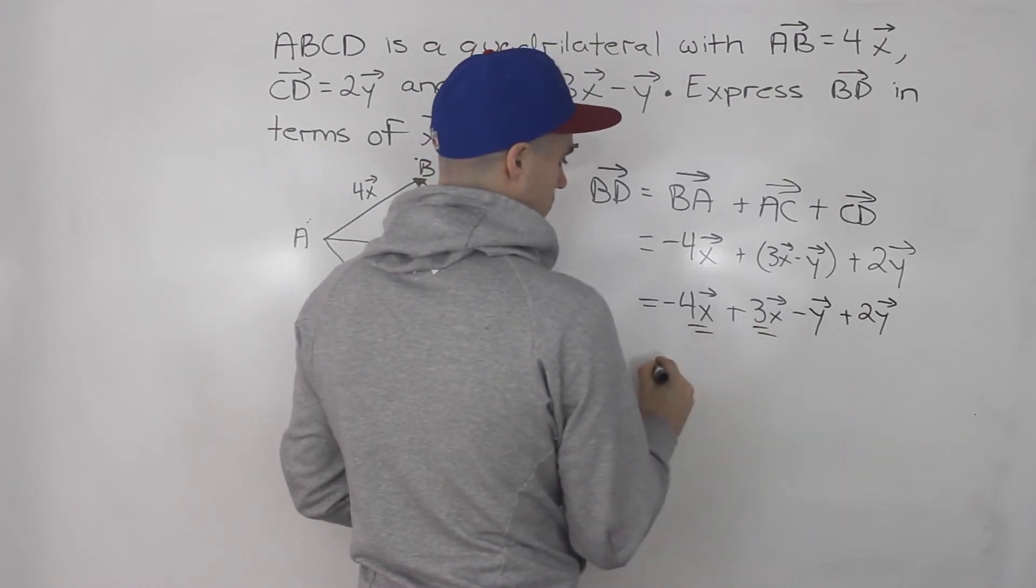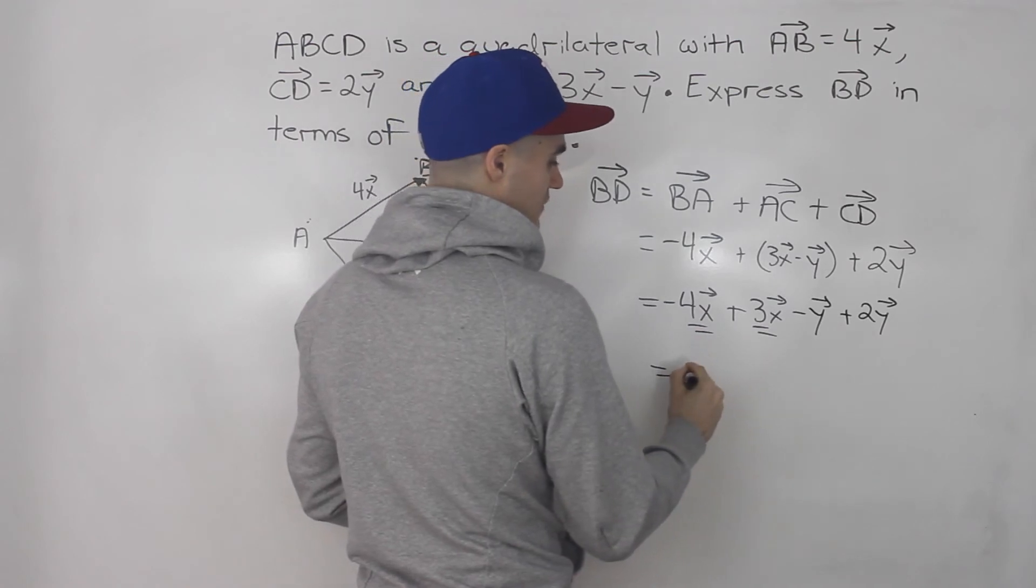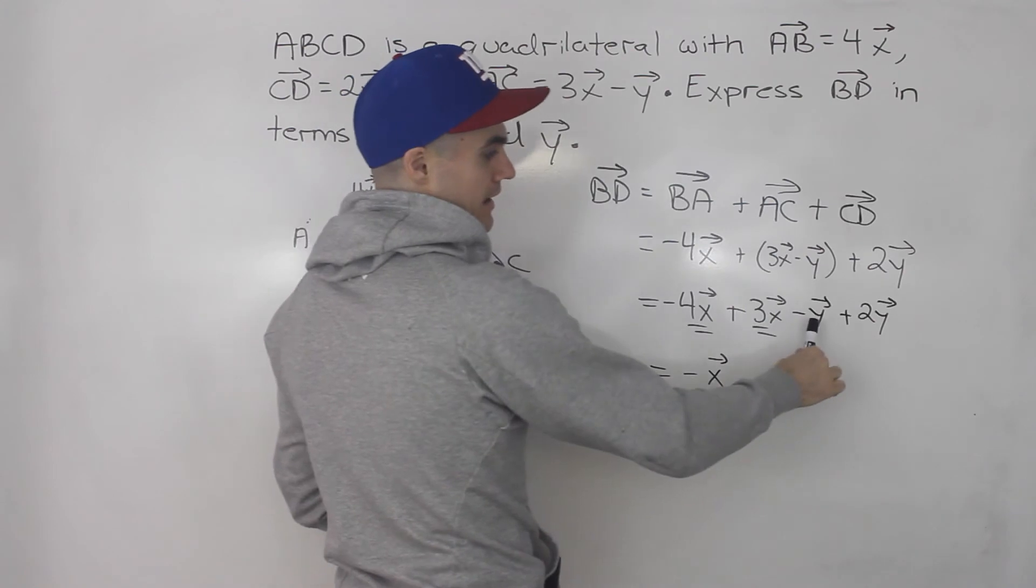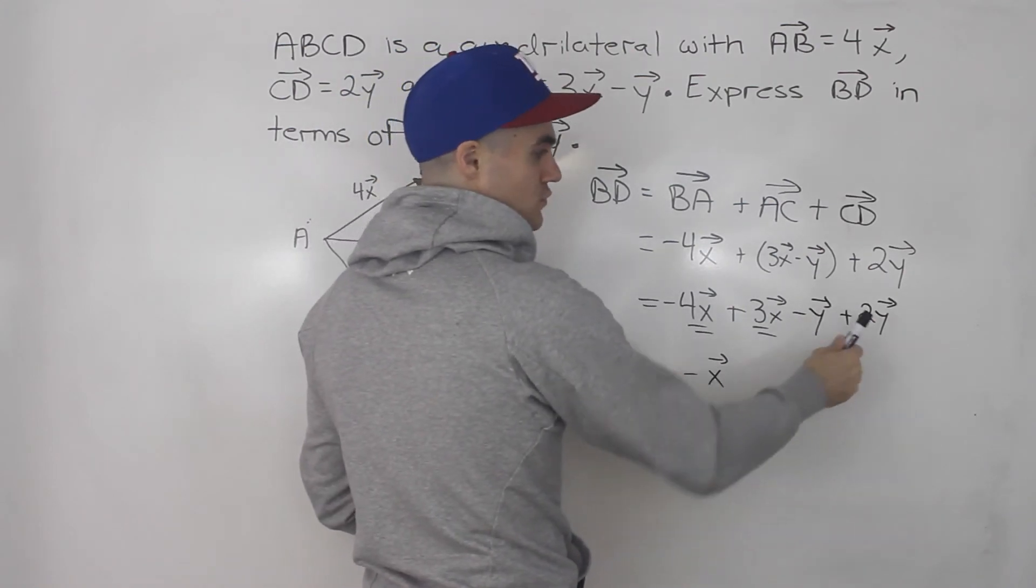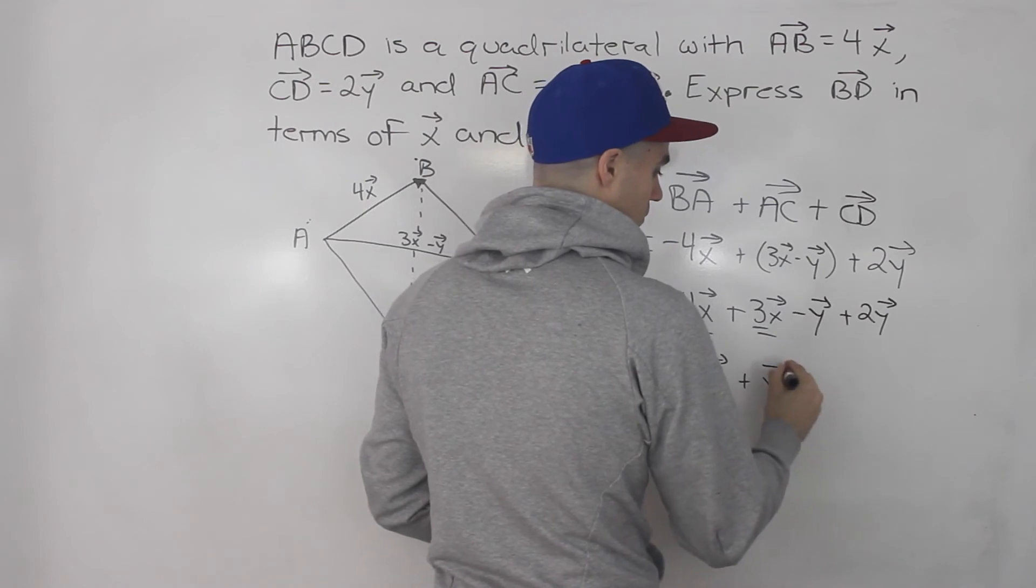These two, we can add negative 4 times vector X plus 3 times vector X. That would give us negative vector X. Then negative vector Y plus 2 times vector Y would give us positive vector Y.